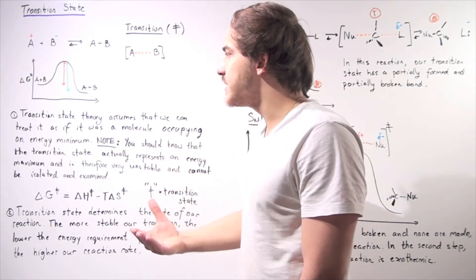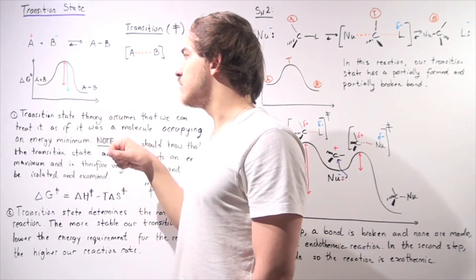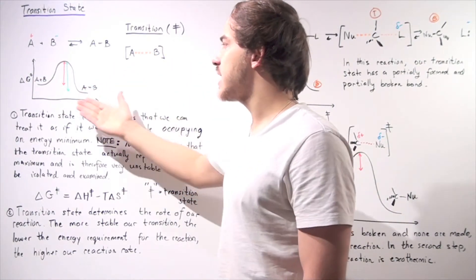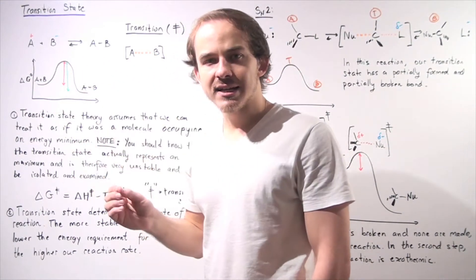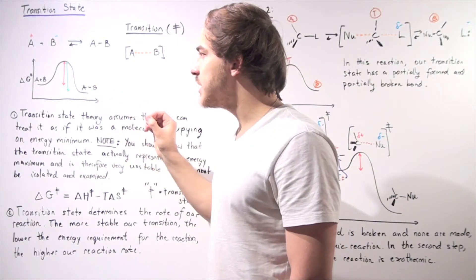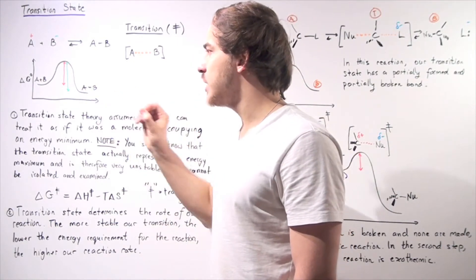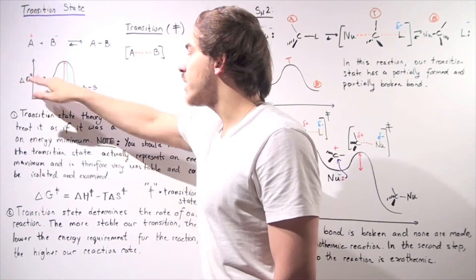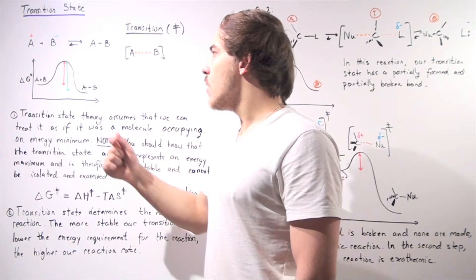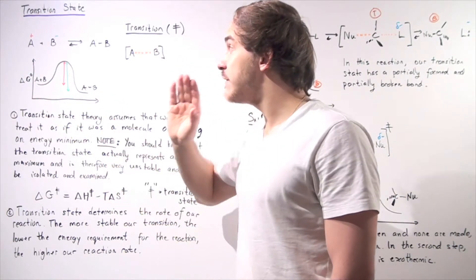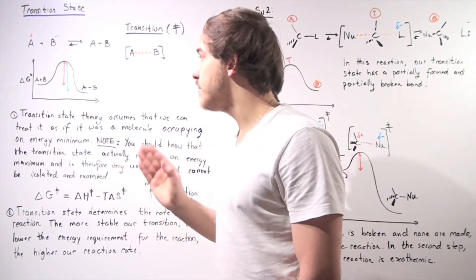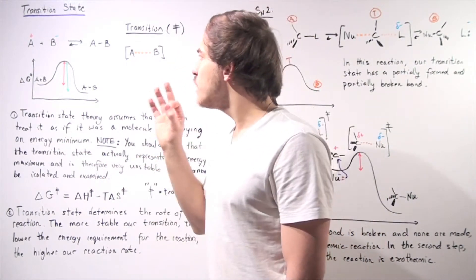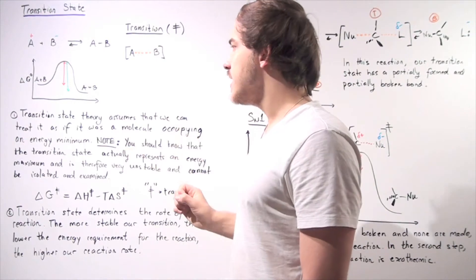Our reactants A and B begin at a certain energy level. Our product is lower in energy because the reaction is exergonic — the change in Gibbs free energy between products and reactants is negative. So we go from reactants, in which we have no bonds between A and B, to our product, in which we have a fully formed covalent sigma bond between A and B.